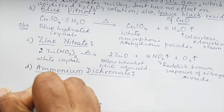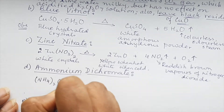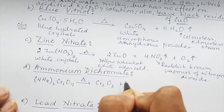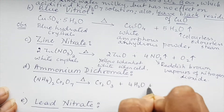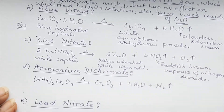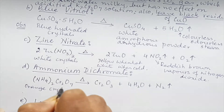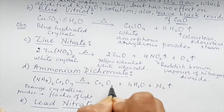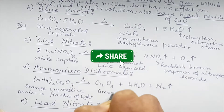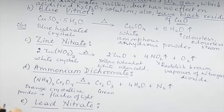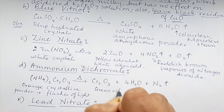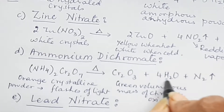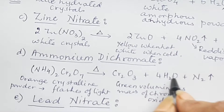Now ammonium dichromate: (NH₄)₂Cr₂O₇ on heating gives Cr₂O₃ (chromium oxide) + 4H₂O (steam) + N₂ (gas). Ammonium dichromate is an orange crystalline powder; on heating it gives flashes of light and leaves a residue of chromic oxide, which is green in color. This is so voluminous in mass we call it a green voluminous mass of chromic oxide. Colorless odorless steam is also evolved; nitrogen has no observation.